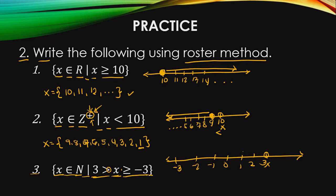Starting at 2 and going to the left — since it's less than. Next: greater than or equal to negative 3. Is negative 3 included? Yes — because it can be equal to negative 3. So x must be greater than negative 3, going to the right.